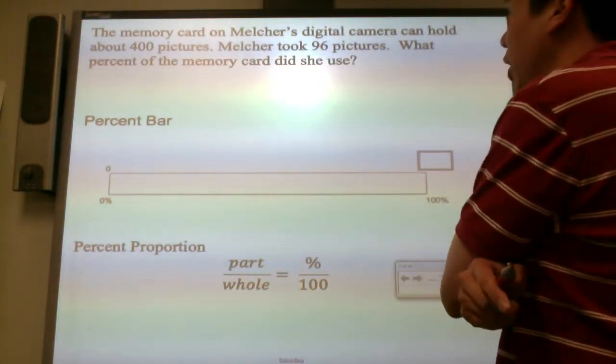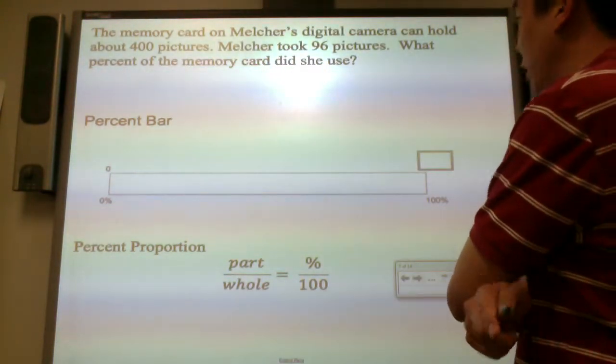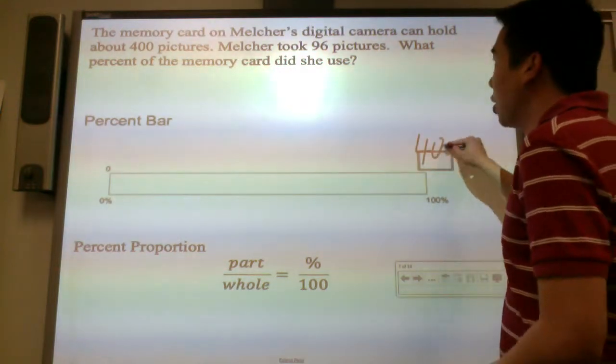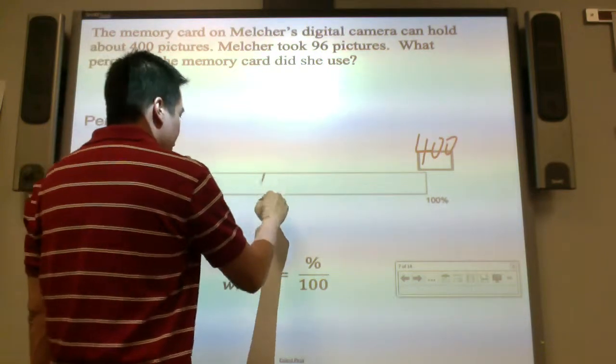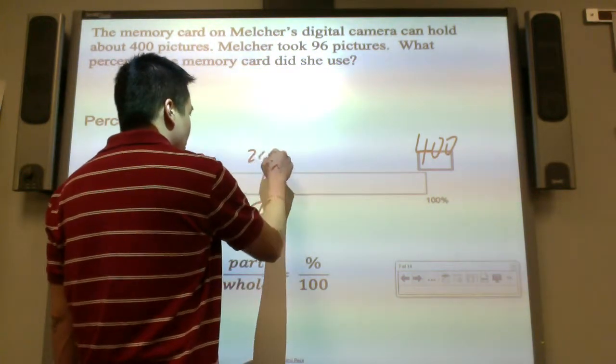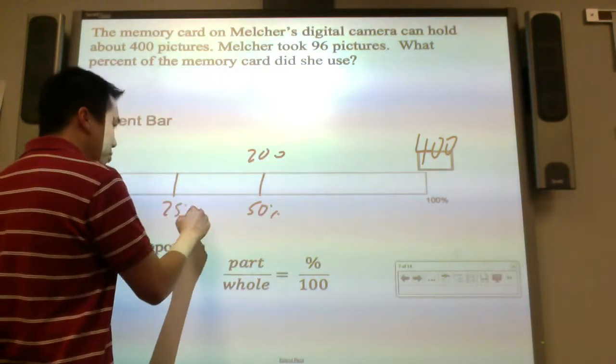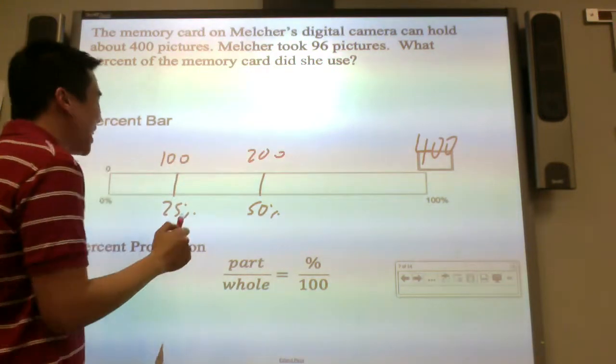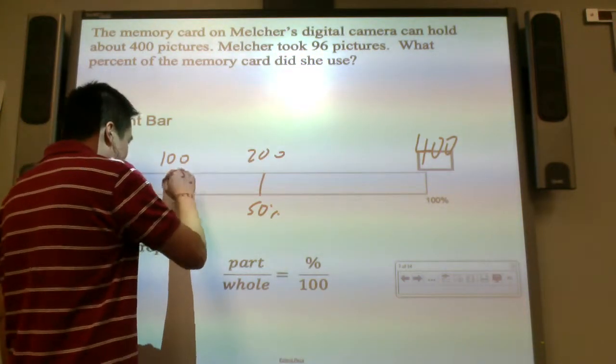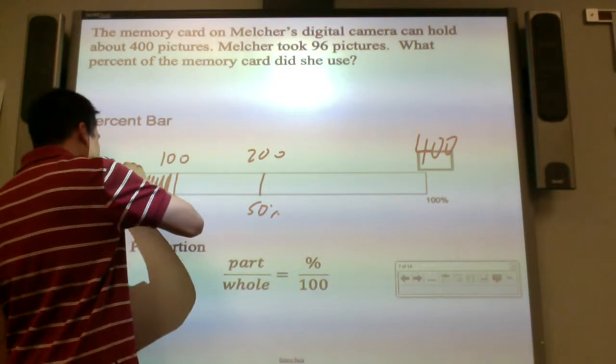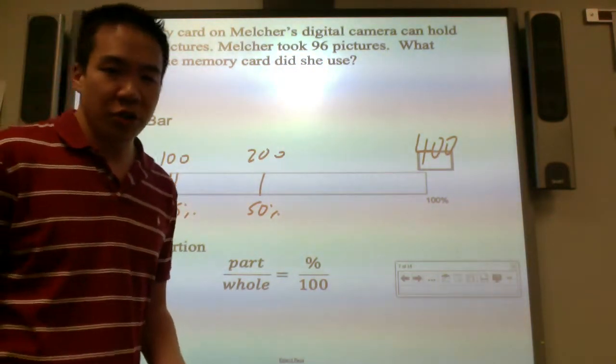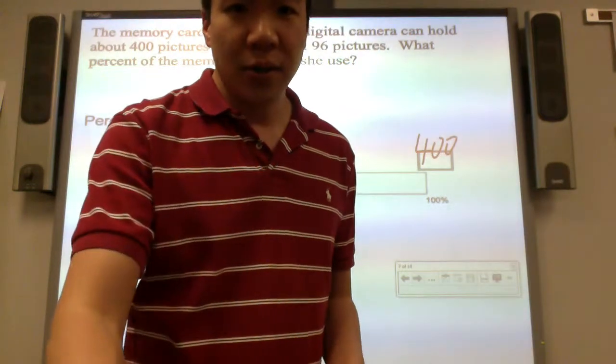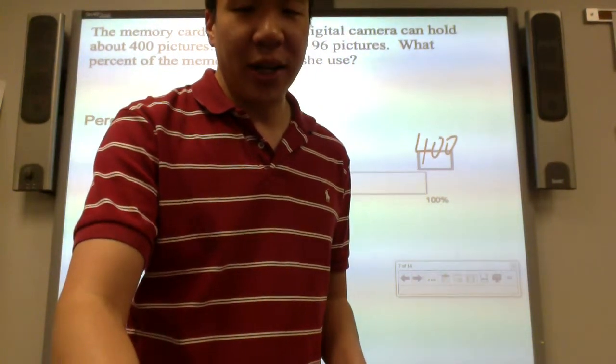The memory card of Melcher's digital camera can hold 400 pictures. Melcher took 96 pictures. What percent did she use? We know 50% is 200, 25% is 100. So 96 pictures will be somewhere right here. If I had to take a guess, I know it's less than 25%. It's either 24%, 23%, or 22%. We have to figure out which one it is.